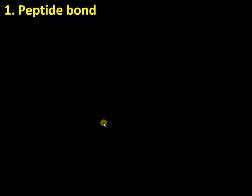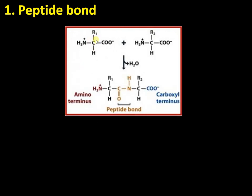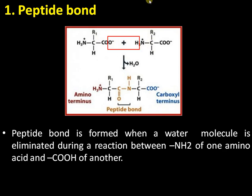First, the most important connection between amino acids — the peptide bond. Each amino acid consists of a central carbon atom with an amino group, a carboxyl group, and a hydrogen atom. This is the constant region, and this is the side chain R1, which may vary between amino acids. The peptide bond is formed between the carboxyl group of the first amino acid and the amino group of the second amino acid.